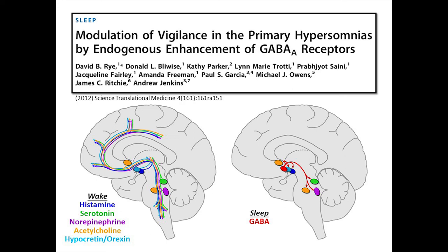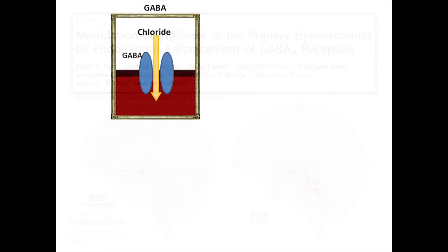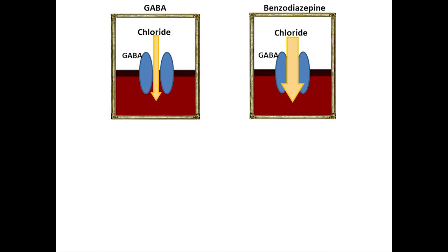What exactly does this mean and what are the consequences? When GABA binds to a GABA-A receptor, the receptor opens a pore in the membrane that allows negatively charged chloride ions to enter. The influx of these negative charges inhibits the neuron from firing an action potential because the neuron is prevented from reaching the required threshold of positive charges. When benzodiazepines bind to the GABA-A receptor, they increase the efficiency of the receptor — when GABA then binds, more chloride ions flow into the neuron compared to when GABA binds alone.